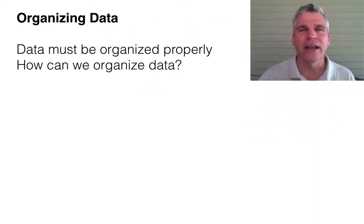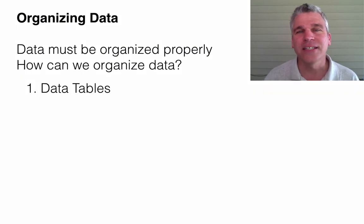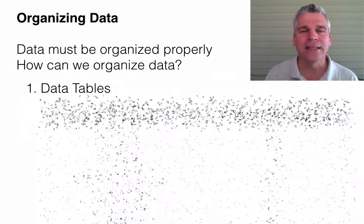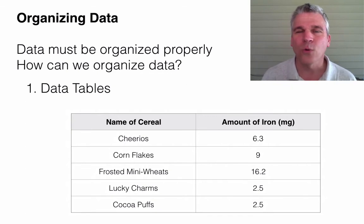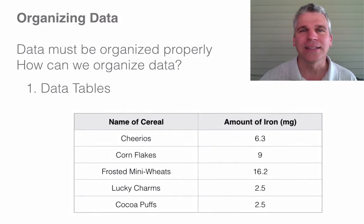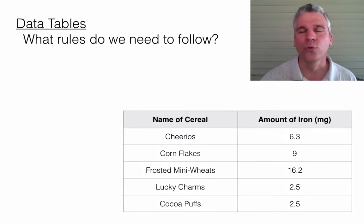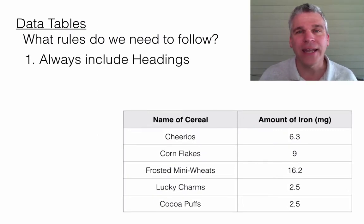Primarily, we're going to be looking at organizing data in one of two ways. The first is the simplest, and that is simply by making a data table. Now when we make a data table, there's a lot of information we can get from a table such as this. This table gives us quite a bit of data. What we're focusing on, though, is how this data is organized. So when we're making a data table, there are really just two rules that we need to follow. Rule number one is that we always have to include the headings — the table wouldn't make sense without them.